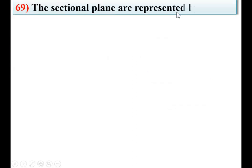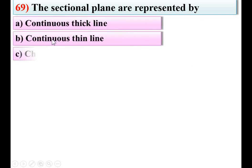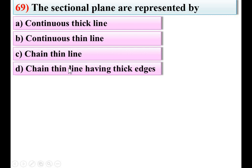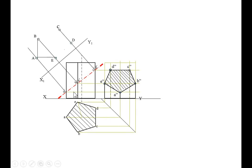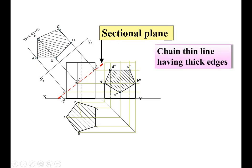Question 69: Sectional planes are represented by — option A: continuous thick line, B: continuous thin line, C: chain thin line, D: chain thin line having thick edges. For any sectional plane, it is always represented by a chain thin line having thick edges. So D is the right answer. In the figure shown, the solid object is cut by the sectional plane, and you can see this is the chain line having thick edges for the sectional plane.